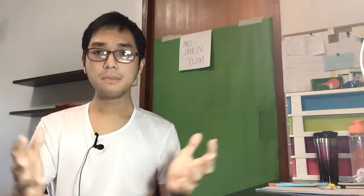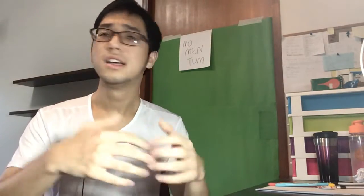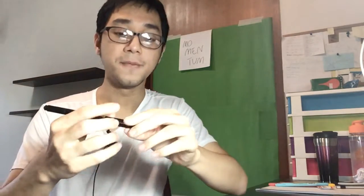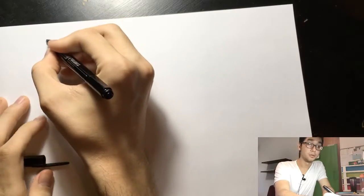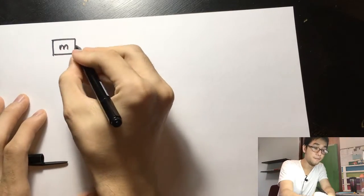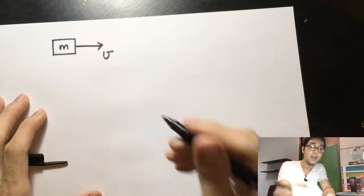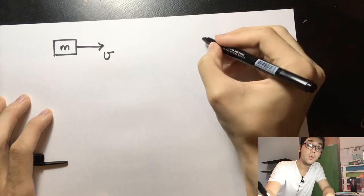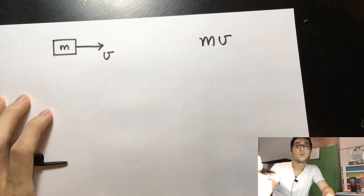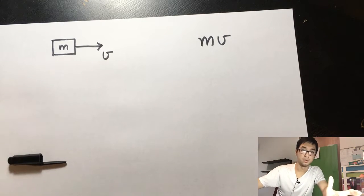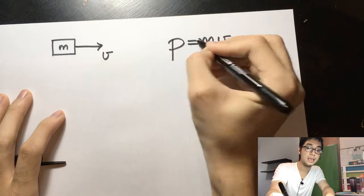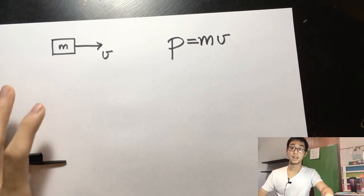Momentum is a concept that a lot of people probably have already seen before, maybe even since high school physics. As a reminder, if you have an object of mass m moving at some velocity v, then its momentum will be equal to m times v — basically just how quickly the object is moving. You denote momentum using the letter p, so p equals mv.